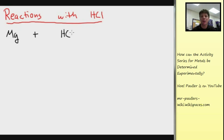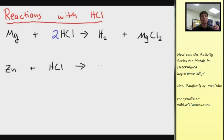Let's take a look at those reactions with hydrochloric acid. Magnesium reacts with hydrochloric acid to produce hydrogen gas. Those are the bubbles we saw, plus magnesium chloride, which is dissolved in the water. Zinc will react with hydrochloric acid as well, also producing bubbles of hydrogen gas.